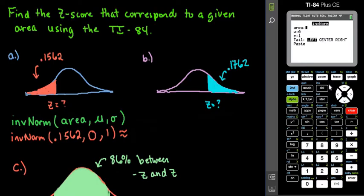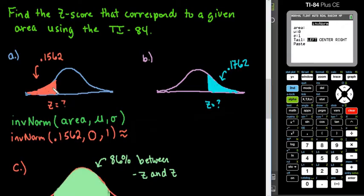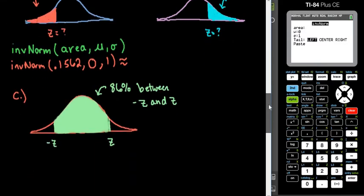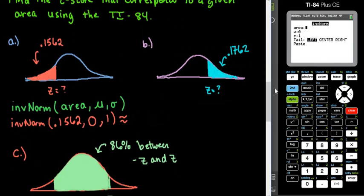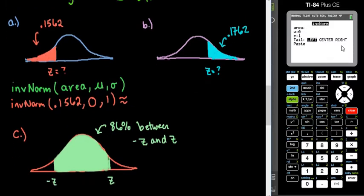For some of you, this may not come up — this part right here where it says tail: left, center, or right. Majority of the TI-83 and TI-84 family graphing calculators do not have the option for left, center, and right. What left means is that the area is shaded to the left, center means it's shaded in between two values, and right means it's shaded to the right. If you have this feature, all you would have to do is type in your area — the 0.1562, the 0.1762, the 0.860 — and then select left, center, or right. But since majority of you probably have graphing calculators that do not have this feature, most of them are programmed automatically to be to the left.